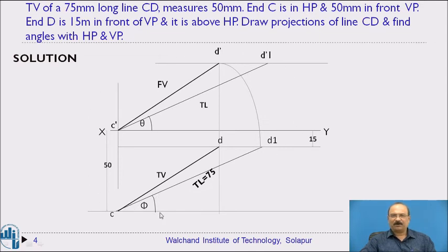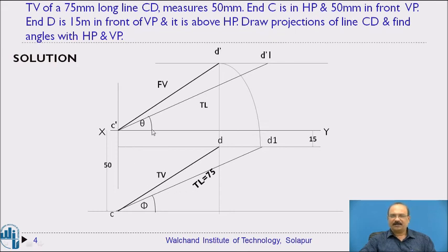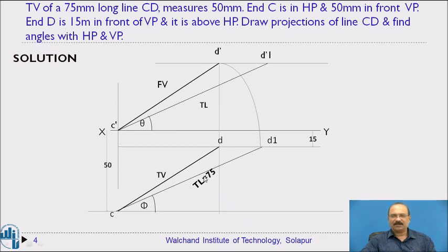After completing the problem, consider the quality of the drawing. The front view line C dash–D dash and the top view line CD must be drawn as dark lines. The XY line and true-length construction lines are medium thickness. Locus lines and all projector lines are thin lines. This is required as per drawing norms. The final expected output is the front view line and the top view line; all other work is construction.